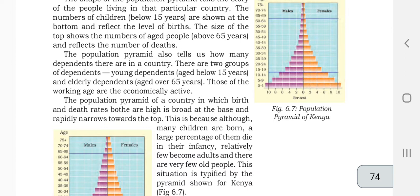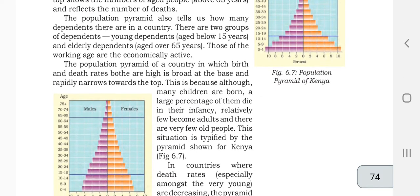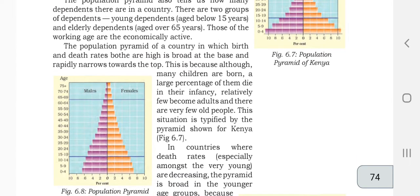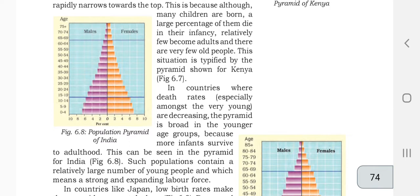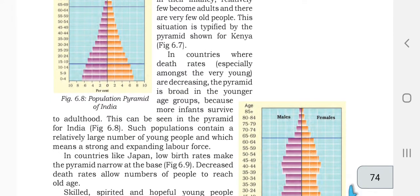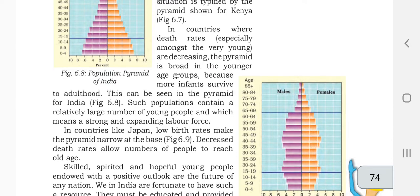There are two groups of dependents: young dependents below 15 years, and old dependents over 65. Those of working age are the economically active. The population pyramid of a country where both birth and death rates are high is broad at the base and rapidly narrows towards the top. This is because although many children are born, a large percentage die in infancy or at a very small age, so few become adults and elderly. This situation is shown by Kenya's pyramid.